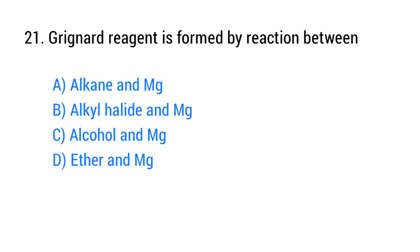Question number 21. Grignard reagent is formed by reaction between? The right answer is option B: Alkyl halide and Mg.